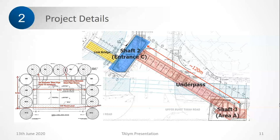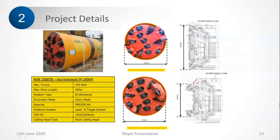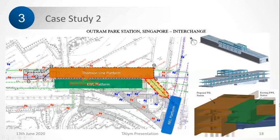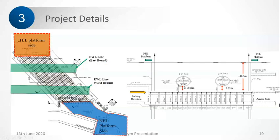Question on case two: what is the cover between the crown of the underpass and the invert of the existing tunnel? The clear distance between the tunnel and the pipe was 2.65 meters, and the clear distance between the tunnel invert and the underpass crown is 2.65 plus 0.8 meters.